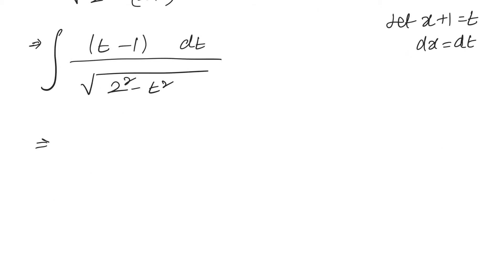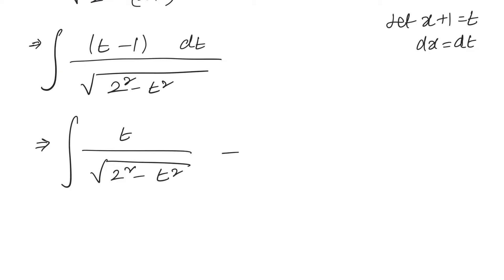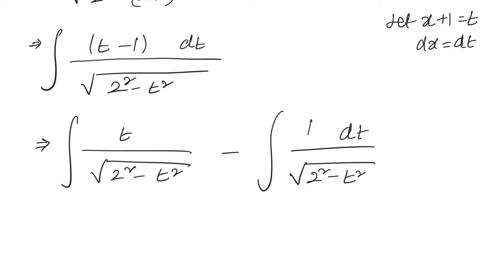We can separate this into two integrals. The first integral will be the integral of t divided by square root of 2 squared minus t squared, minus the integral of 1 divided by square root of 2 squared minus t squared. The second part can be evaluated using the direct formula. For the first part, we take square root of 2 squared minus t squared equal to another variable, so let 2 squared minus t squared equal v squared.